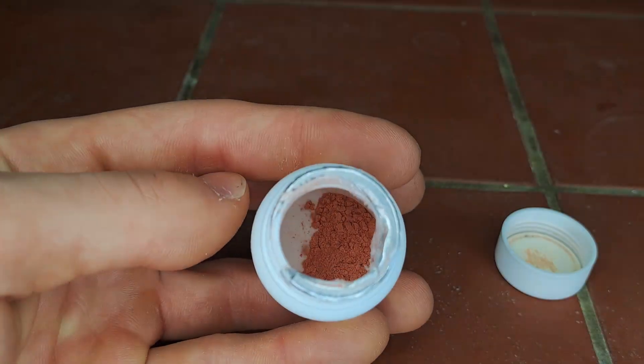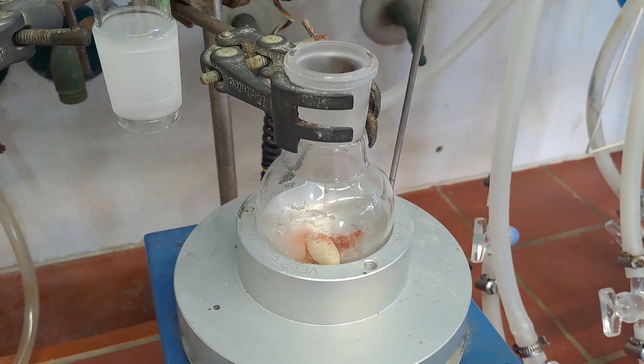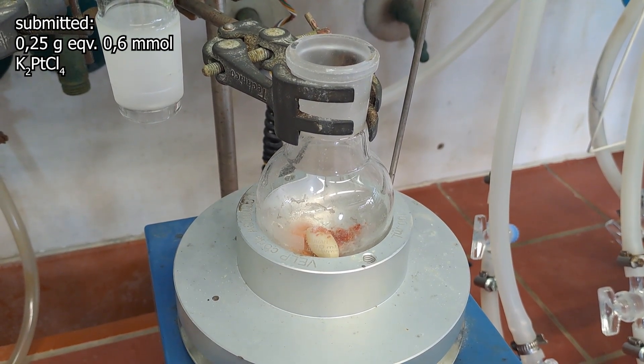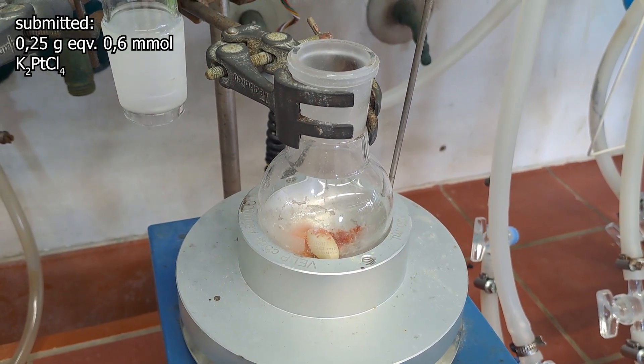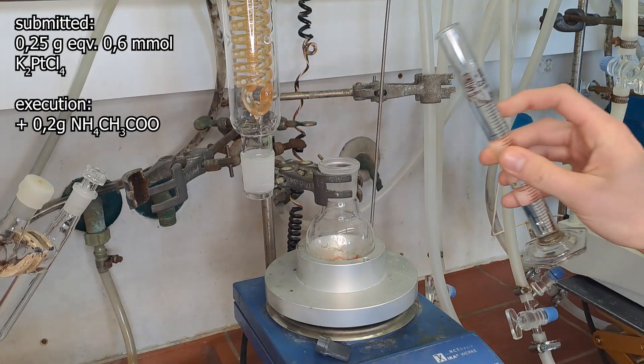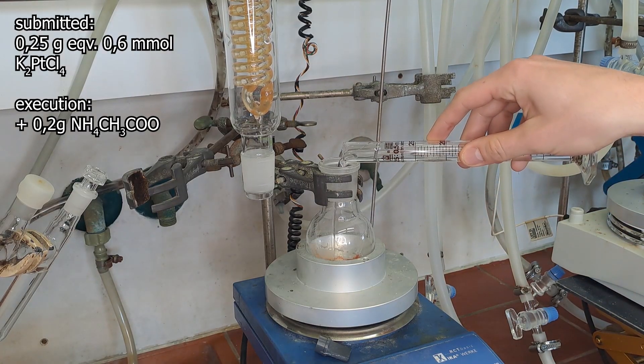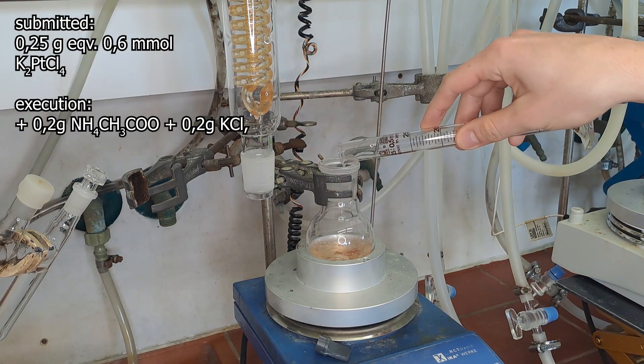Potassium tetrachloroplatinate is a reddish solid. In the flask, we combined 0.25 grams, equivalent to 0.6 millimoles, of potassium tetrachloroplatinate, 0.2 grams of ammonium acetate, and 0.2 grams of potassium chloride.